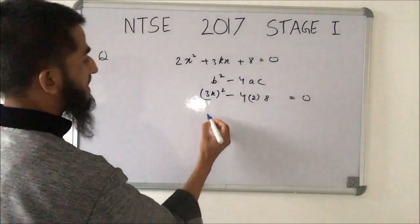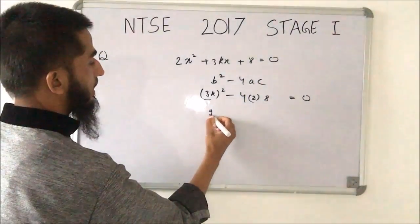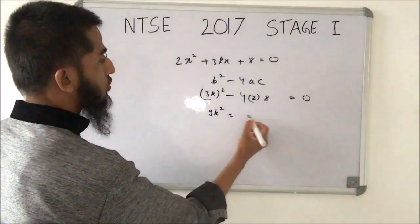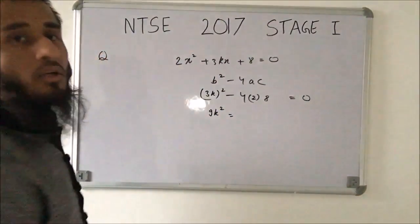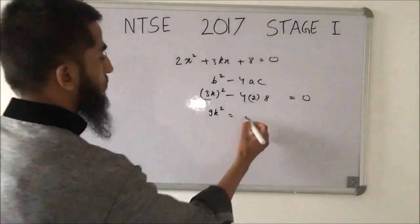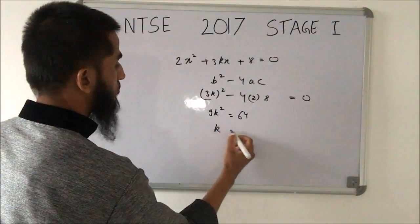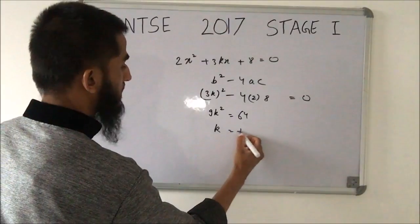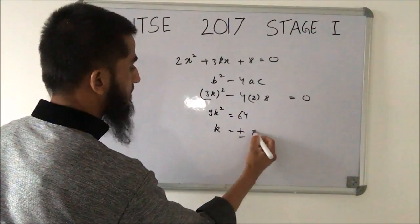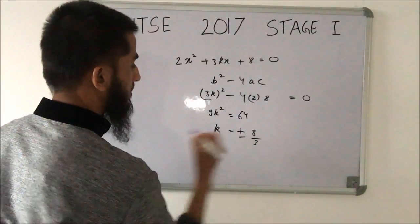Simplifying, we get 9k² = 64, so k equals ±8/3.